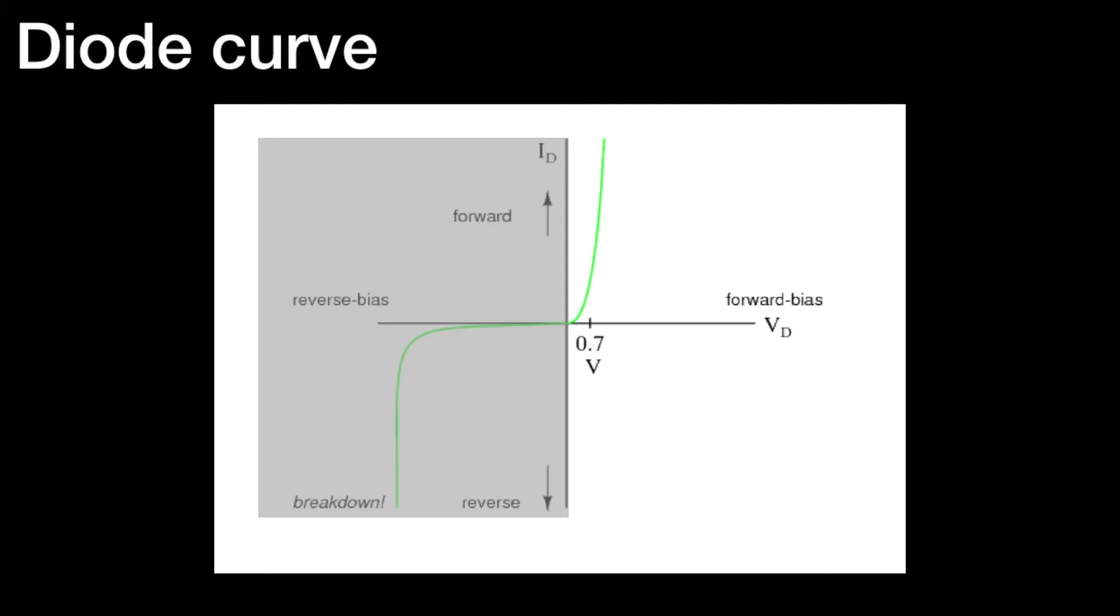This characteristic is exploited by zener diodes. You can buy zener diodes that, for example, have a reverse breakdown of, say, 3.3 volts, and you can use this for regulating power supplies.